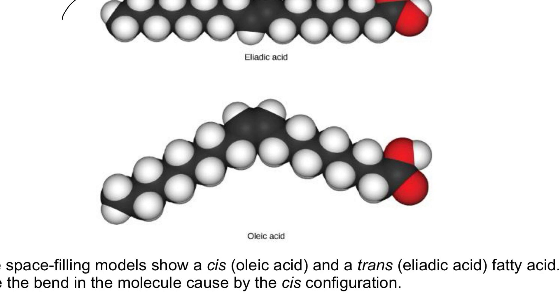As soon as you have a double bond introduced, right, this would be the site of the double bond. Once you have a double bond in place, now you can have a cis or a trans version. This happens to be the cis version of oleic acid because these carbons, right, coming off of the double bonded carbon are both pointing down in the same direction, right?